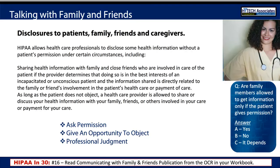Something we've all been taught about HIPAA is that we cannot give any information to a family member, caregiver, or friend who is not on the confidentiality list. HIPAA, believe it or not, is not that prohibitive. The Office for Civil Rights understands that communicating with family and friends is a part of taking care of that patient, and has put out guidance — 'Communicating with Family and Friends' — included in your workbook. Giving out limited information that is necessary or helpful for that patient to be cared for by a caregiver or family member is permissible.